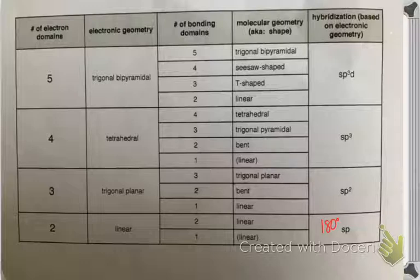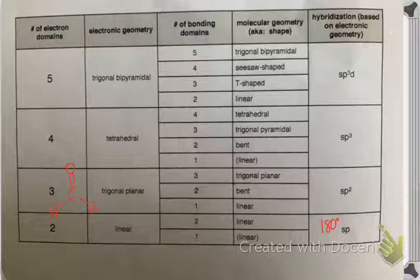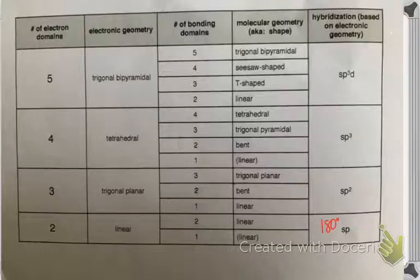For a trigonal planar molecule — we had more than one that was trigonal planar on your sheet — carbon has three domains around it. It's a trigonal planar molecule. Each of those bond angles is going to be 120 degrees.